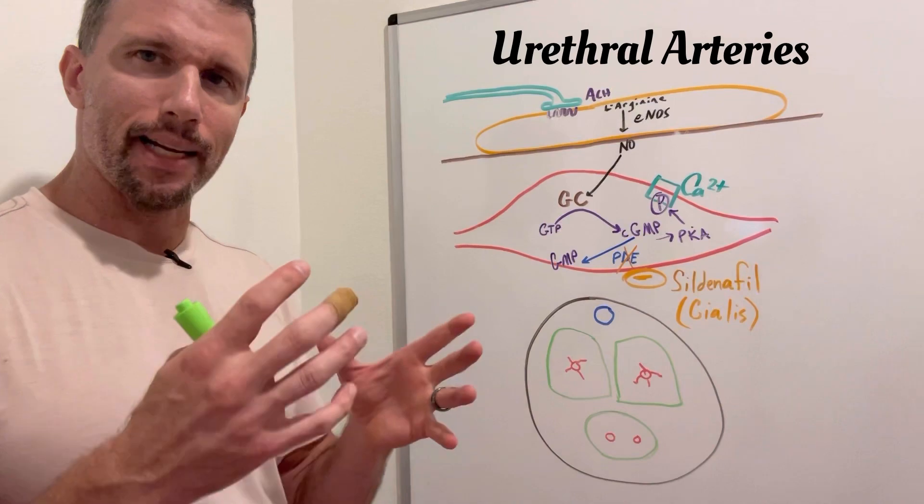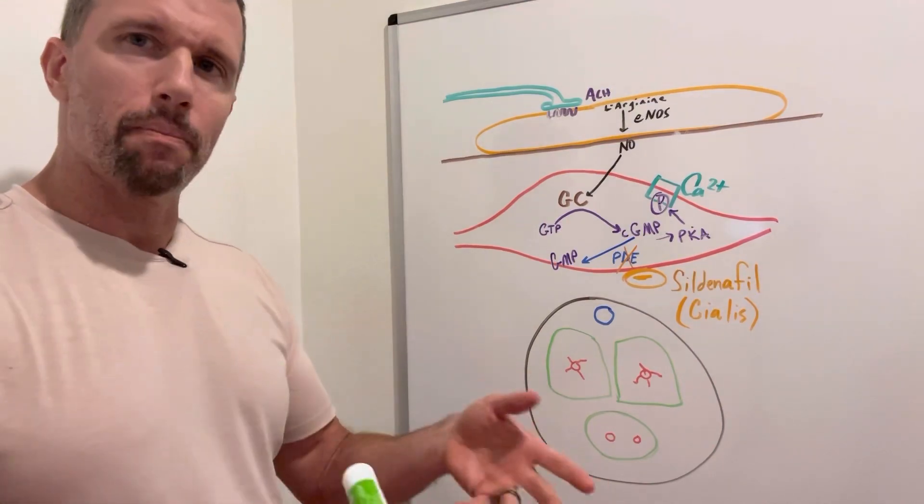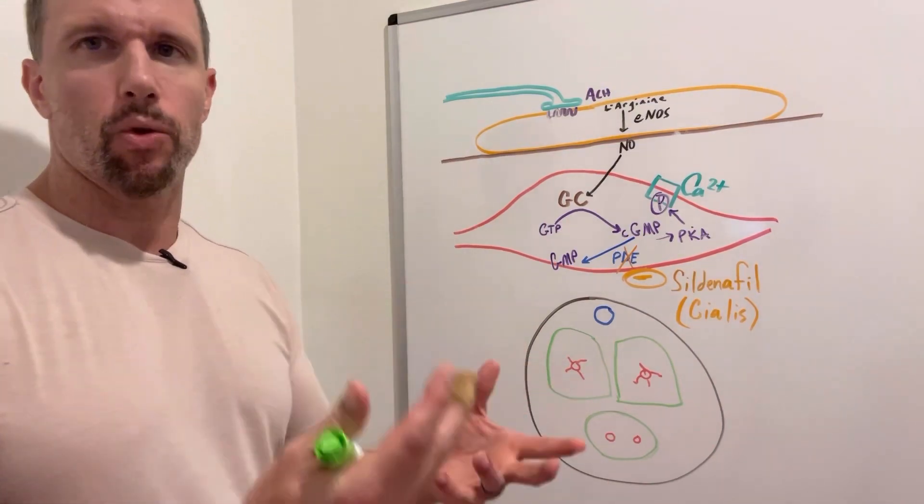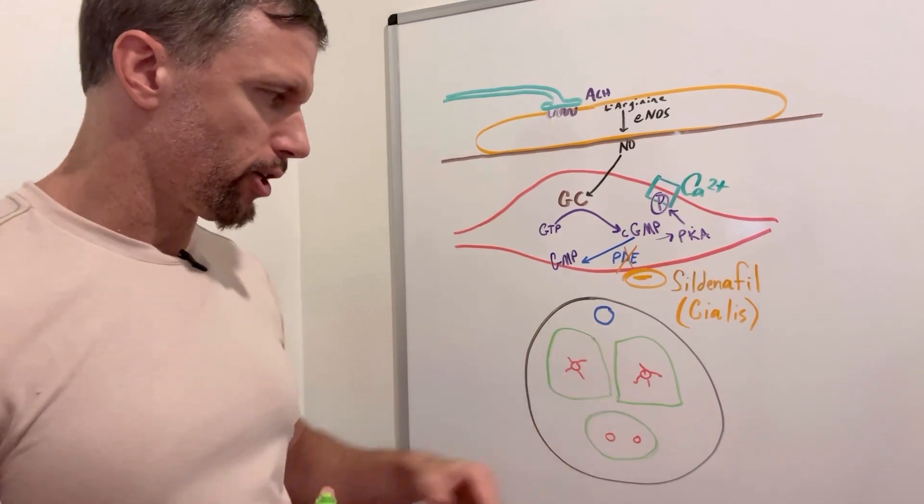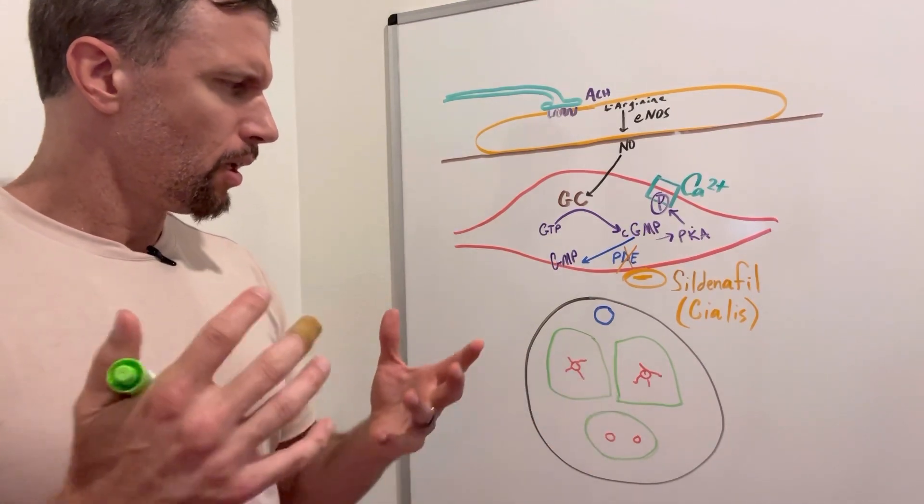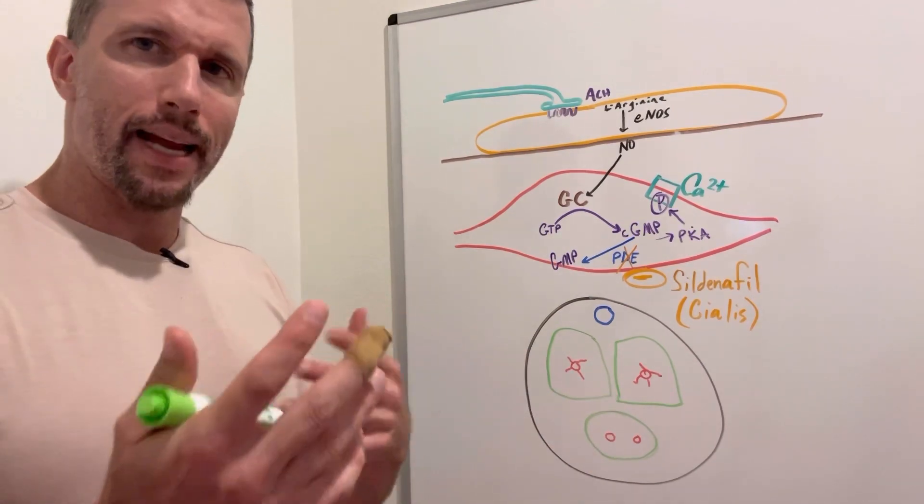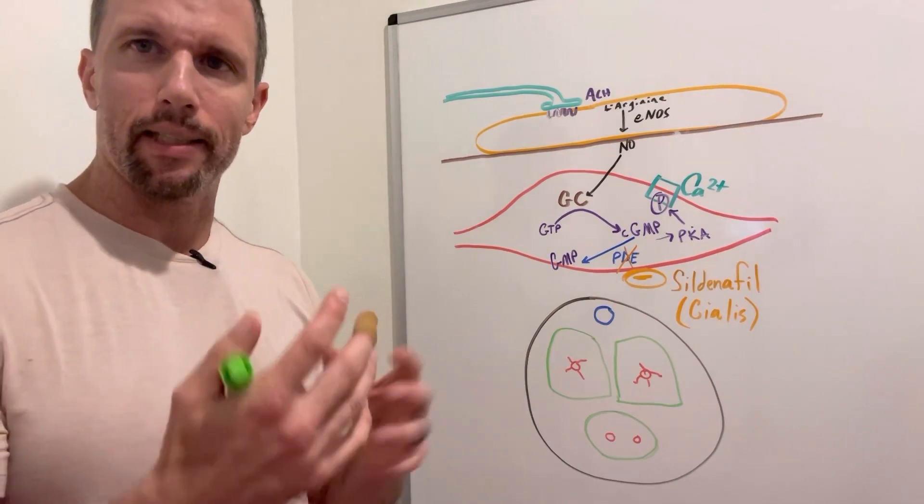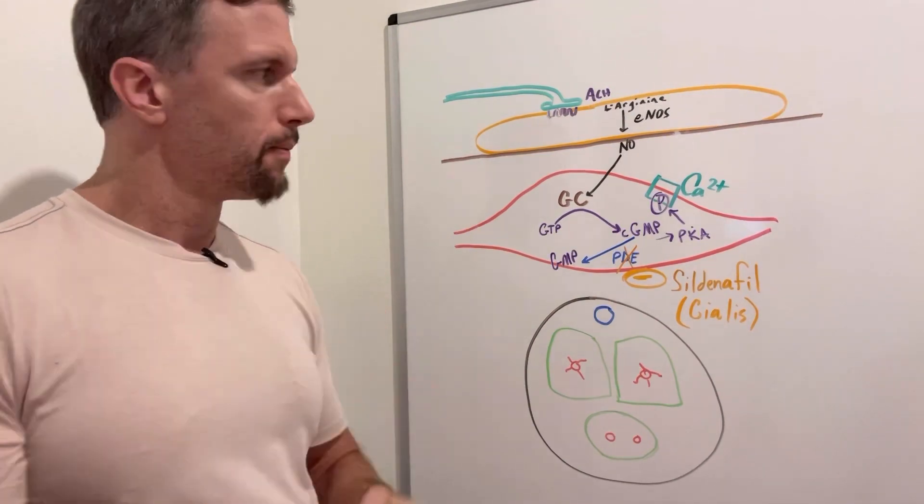So they have this baseline tone, and there's calcium entering the smooth muscle lining these arteries. So as long as that calcium is coming in, muscles are contracting, there's going to be a certain amount of constriction.